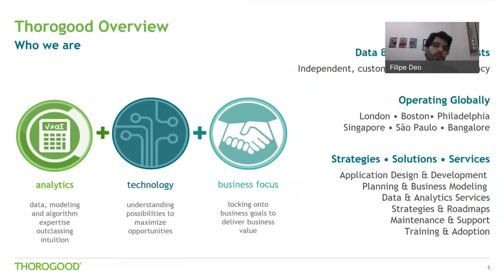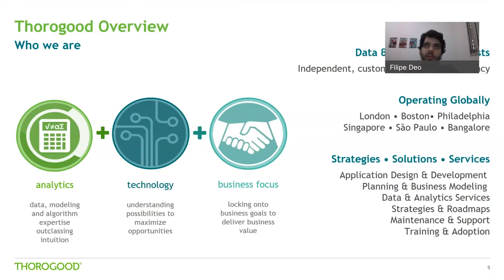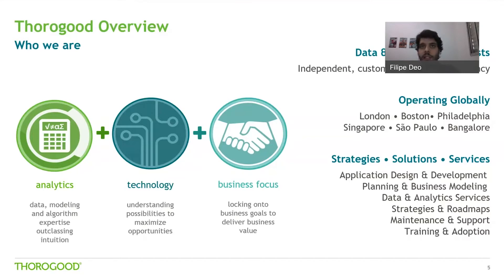Fargood overview: we're an independent consultancy firm in the data and analytics business and we specialize in data science, data visualization and data engineering. We are a global company with offices in the UK, the US, Brazil, India and Singapore. We offer different kinds of services, strategies and solutions — application design and development, planning and business modeling, data and analytics services including ML and AI activities, strategies and roadmaps, maintenance and support, and training and adoption.